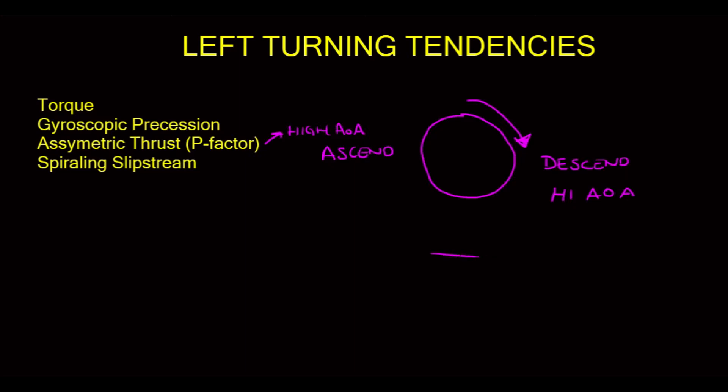Viewed from behind again, our propeller, I'm sorry, viewed from the top, the ascending blade, or this is our left and our right, the ascending blade creates thrust. The descending blade creates more thrust. Higher angle of attack, more lift, more thrust, hence the left turning tendency.